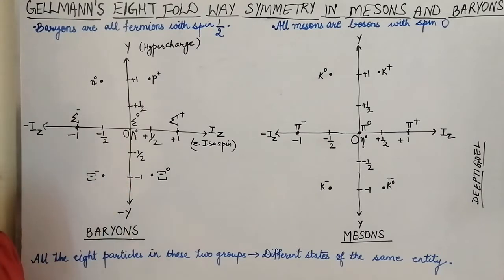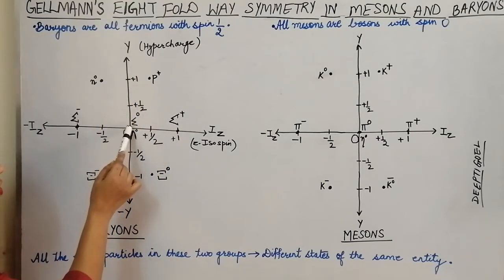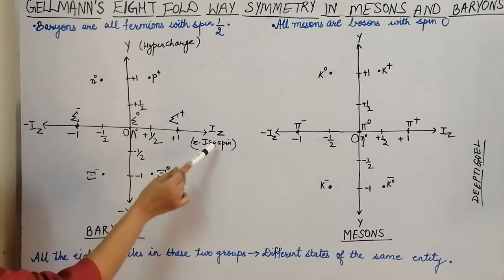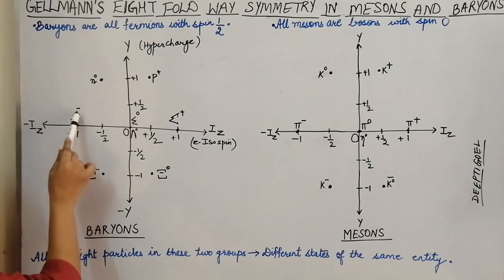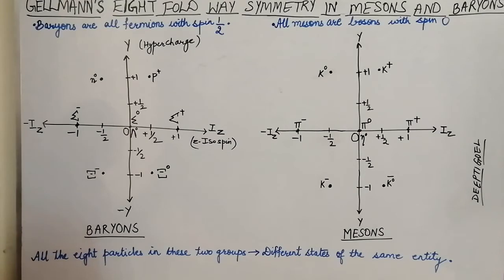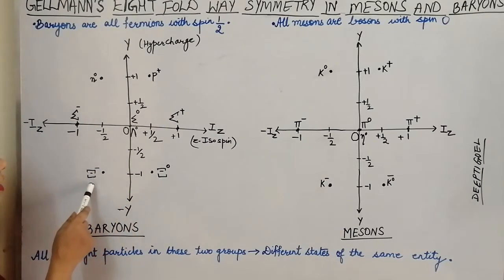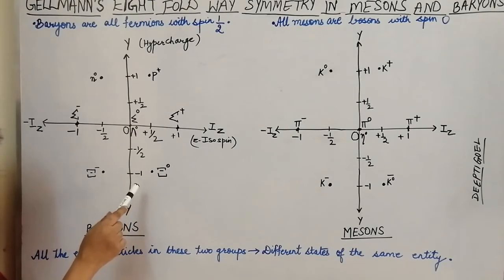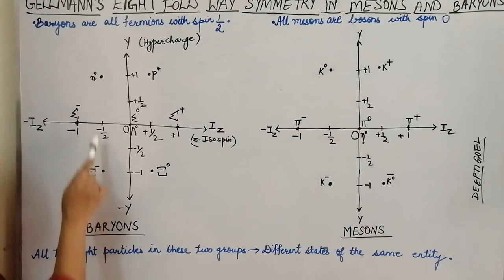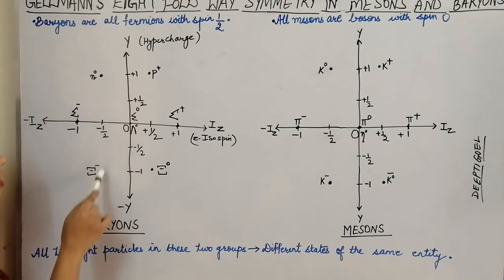When we plot on the Iz–Y graph, sigma naught and lambda naught have Iz and Y values of 0. Sigma plus and sigma minus have hypercharge value 0, but sigma plus has Iz value +1 and sigma minus has Iz value −1. Proton and neutron both have Iz value ±½ and hypercharge +1, as they are non-strange particles with baryon number +1. The cascade neutral and cascade negative have strangeness −2, so adding baryon number +1 gives hypercharge −1. Cascade neutral has Iz = +½ and cascade negative has Iz = −½.